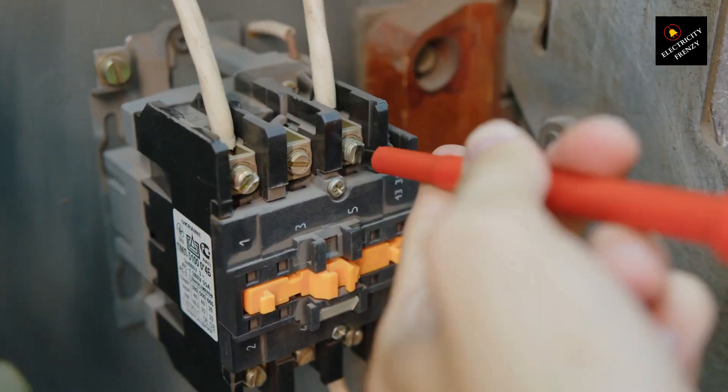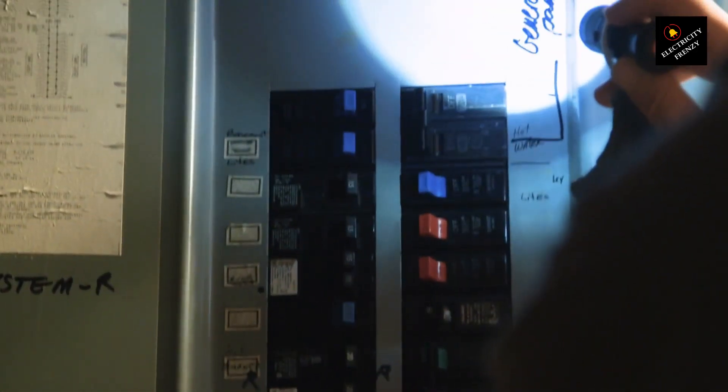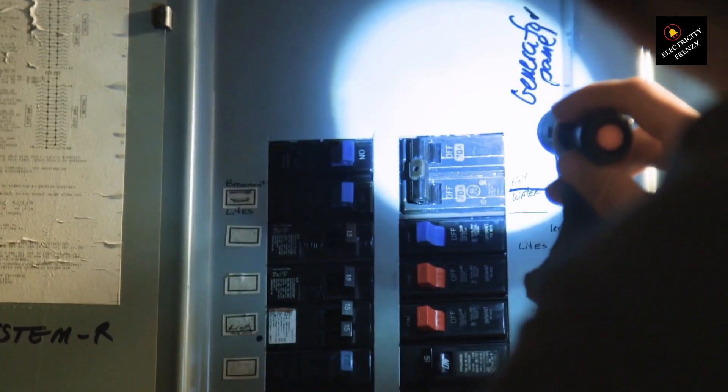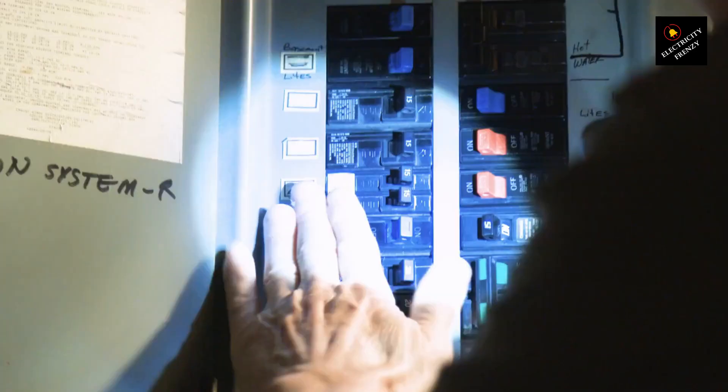First up, overload. What does that mean? Well, when you plug in too many devices, like your hairdryer, a microwave, and your iron all at once, you're asking the circuit to do too much. And guess what? The breaker's job is to protect your wiring so it trips to prevent overheating. Simple, right?